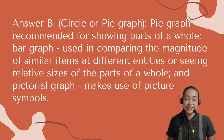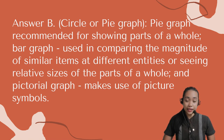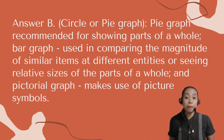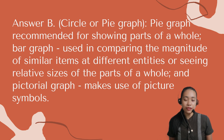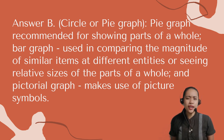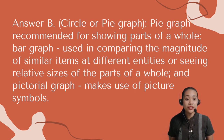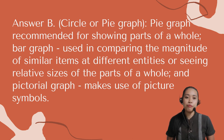The correct answer is letter B — Circle or pie graph. A pie graph is recommended for showing parts of a whole. A bar graph is used in comparing the magnitude of similar items at different entities or seeing relative sizes of the parts of a whole. And a pictorial graph makes use of picture symbols.